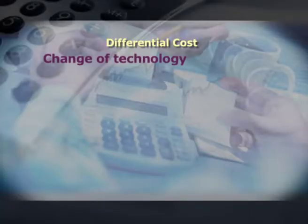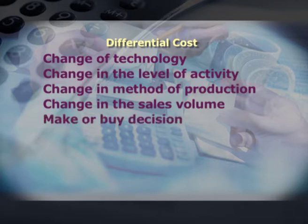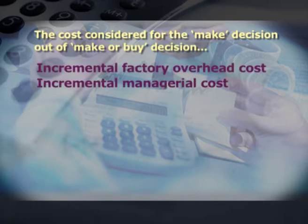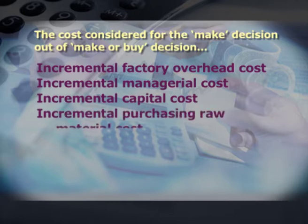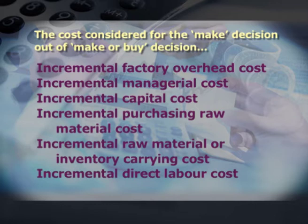Second is differential cost. Differential cost is the increase or decrease in total cost under different alternatives. Alternatives may include change of technology, change in level of activity, change in method of production, change in sales volume, make-or-buy decisions, take-or-refuse decisions, or buy-or-rent decisions. It is found by subtracting the cost of one alternative from the cost of another. Examples include incremental factory overhead cost, incremental managerial cost, incremental capital cost, incremental purchasing of raw material cost, incremental raw material or inventory carrying cost, and incremental direct labor cost — all of which may be considered for the make side of a make-or-buy decision.